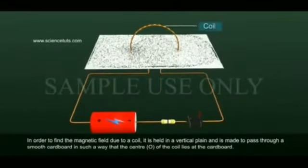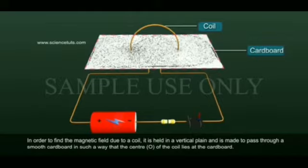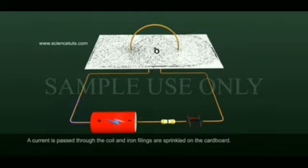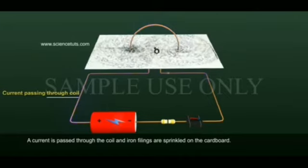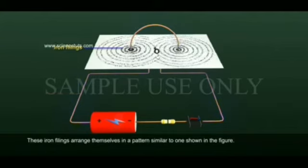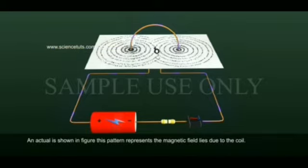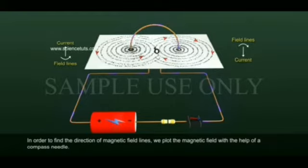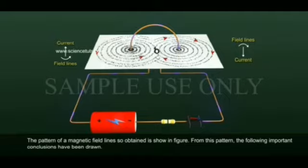In order to find the magnetic field due to a coil, it is held in a vertical plane and made to pass through a smooth cardboard such that the center O of the coil lies at the cardboard. A current is passed through the coil and iron filings are sprinkled on the cardboard. These iron filings arrange themselves in a pattern similar to the one we can see here, representing the magnetic field lines due to the coil. To find the direction of magnetic field lines, we can use a compass needle.